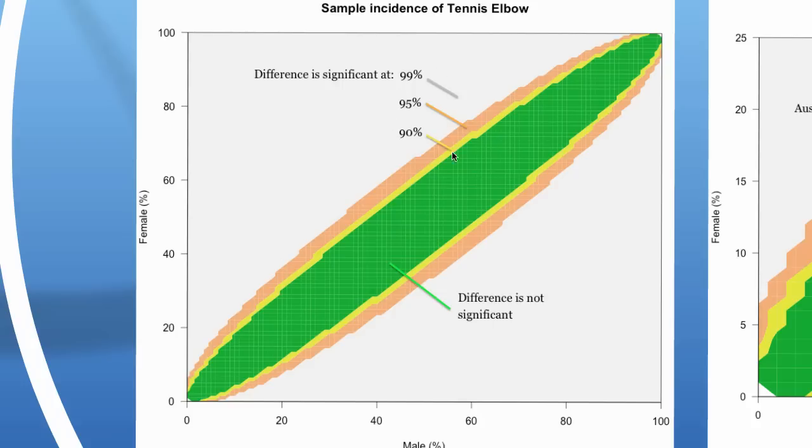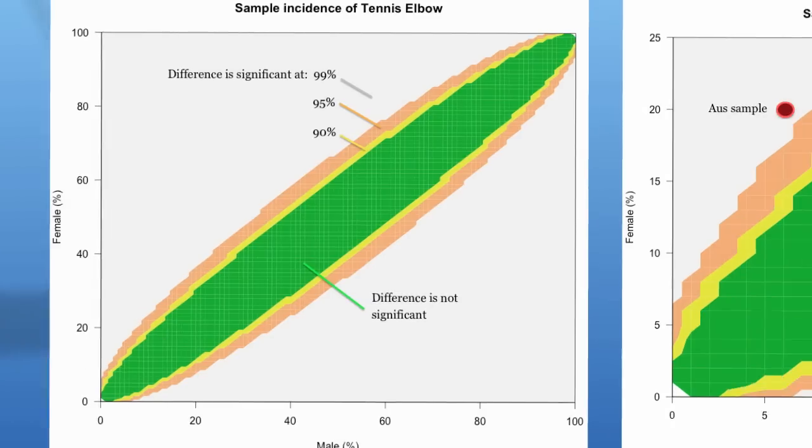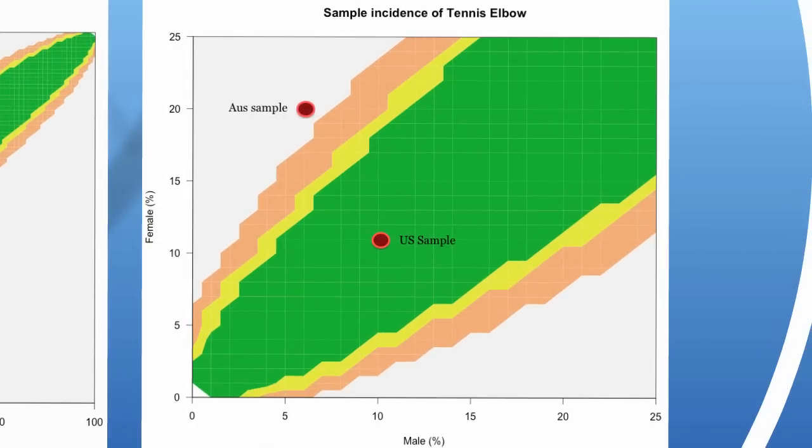I was keen to see what the effect was when the proportions are low versus when they're close to 50%. In our case, we're just looking at this bottom section, this bottom fifth of this plot. If we blow that up, we can see where we have our two samples. There's our Australian sample with 6% for male and 20% for female, and here's our US sample with 10% and 11%.